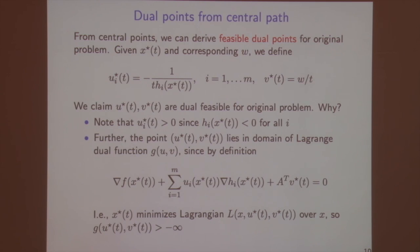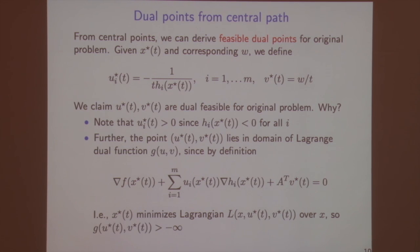A very useful fact is that we can always derive feasible dual points for the original problem from any point on the central path. Given a primal feasible point x*(t) and corresponding dual feasible points, we can compute a duality gap that bounds how far we are from optimality in the original problem — a very powerful characterization.